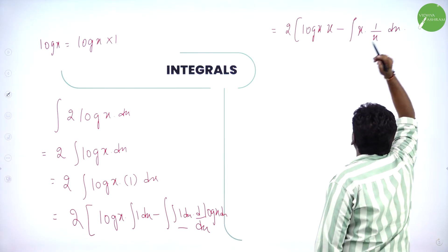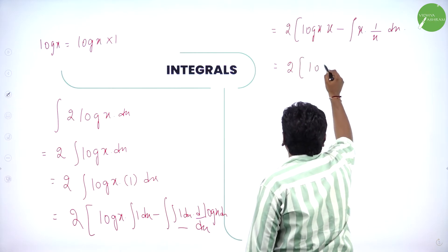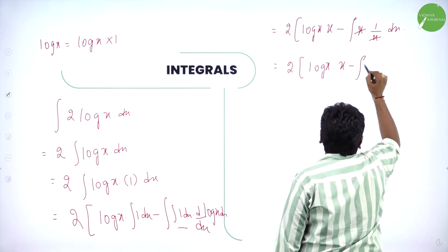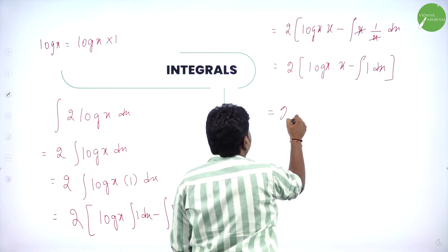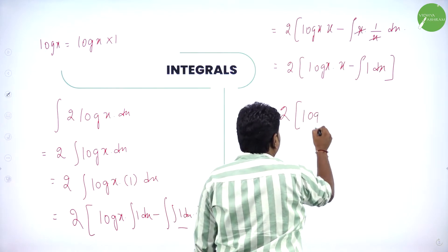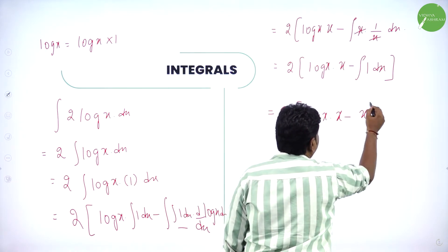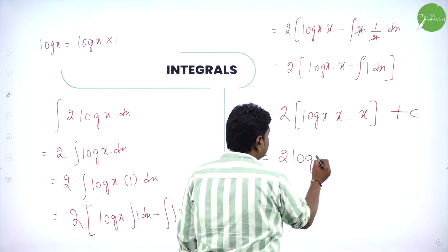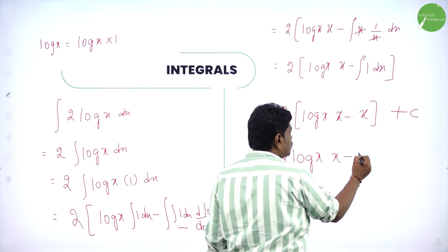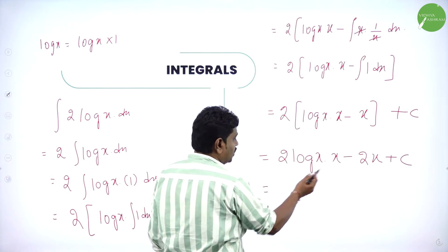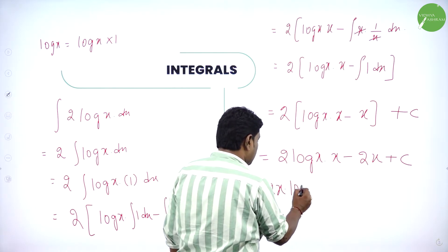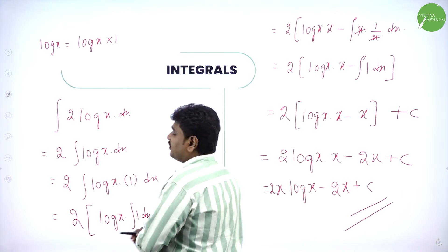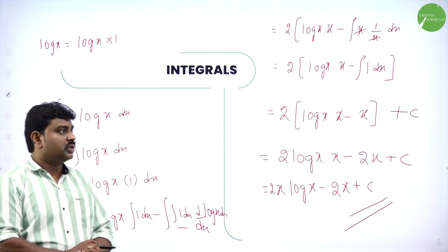That gives: 2·[log(x)·x minus integration of (x·(1/x)) dx]. I can cancel x and x, leaving integration of 1 dx, which is x. So: log(x)·x minus x, then put plus c. Taking 2 out: 2·log(x)·x minus 2x plus c, or we can write 2x·log(x) minus 2x plus c. This is the final answer.